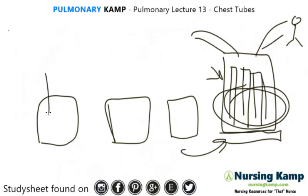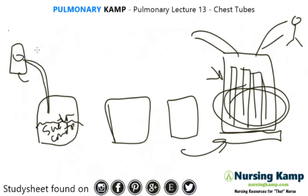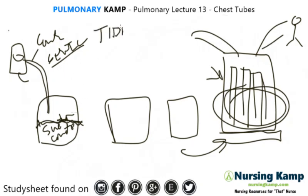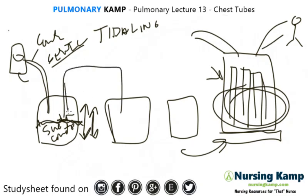In the three-bottle system, the first section is called the suction control chamber. The suction control chamber should always be gently bubbling — it is connected to a regulator that provides continuous suction. It should always be gently bubbling, and it should not be titling, meaning it shouldn't be fluctuating or going up and down.